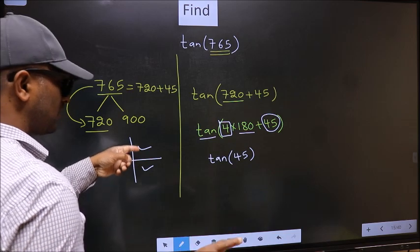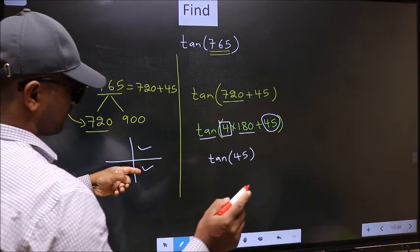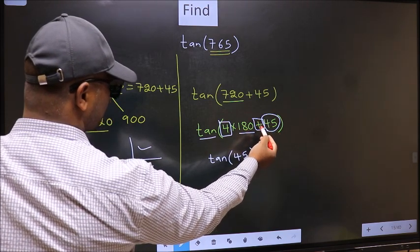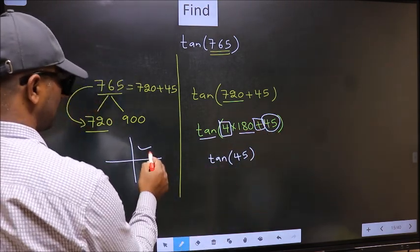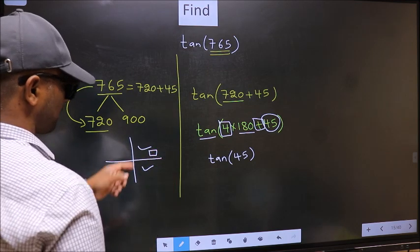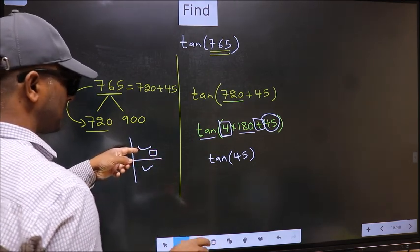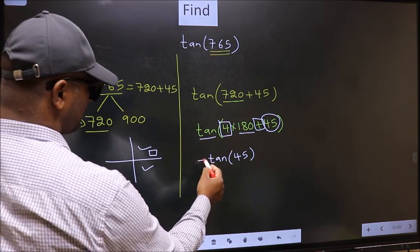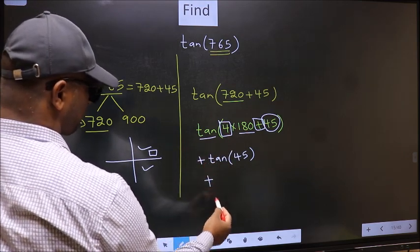So now to select the quadrant, we should look at this symbol. Here we have plus, that means angle lies in the first quadrant. And in the first quadrant, tan is positive, so we should put plus.